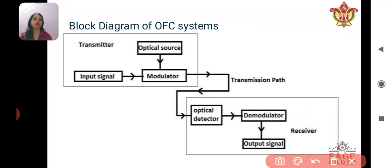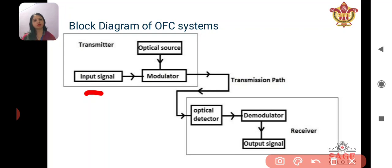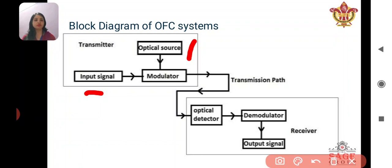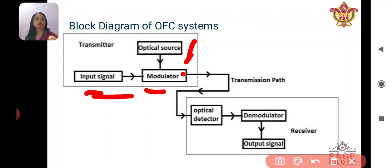The first part is the transmitter. The transmitter takes the input signal — for example, 'hello' — the signal we want to transmit. The second component is the optical source, which is a light source. You can use an LED or a laser light as your optical source. The third component is the modulator. When the signal comes to the optical source, it is modulated. The second part of the system is the optical fiber, through which the optical signals move.